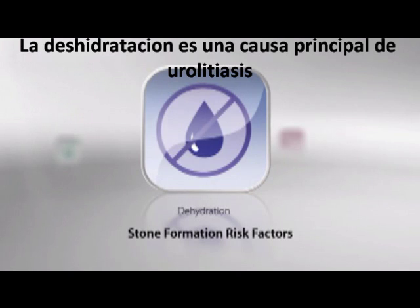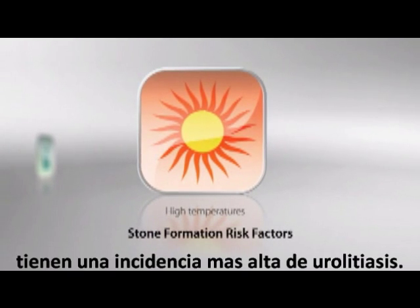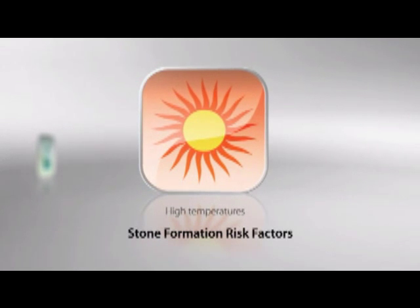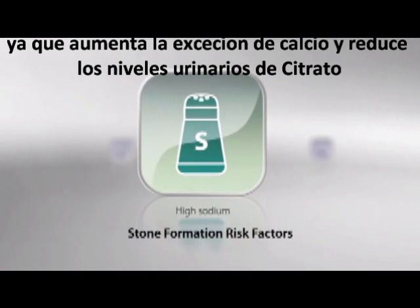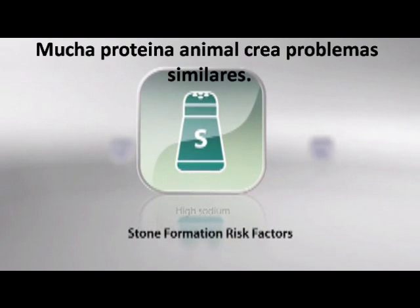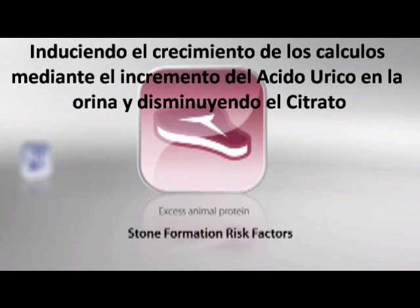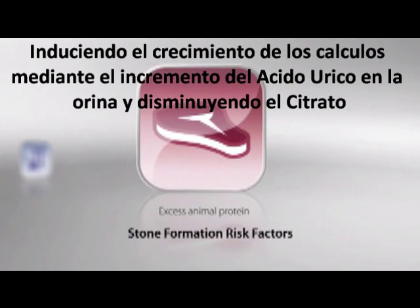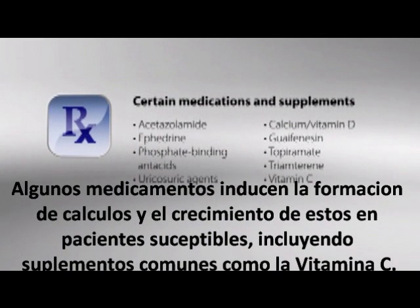Dehydration is a major cause of kidney stones, which is why people living in areas with high temperatures and humidity have a higher incidence of stone formation. A diet high in sodium is a double risk because it increases calcium excretion and reduces urinary levels of stone-inhibiting citrate. Too much animal protein creates similar problems, encouraging stone growth by increasing urinary uric acid and reducing urinary citrate. Certain medications are also known to encourage stone formation or growth in susceptible patients, including common supplements such as vitamin C.